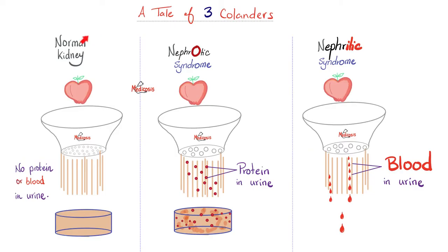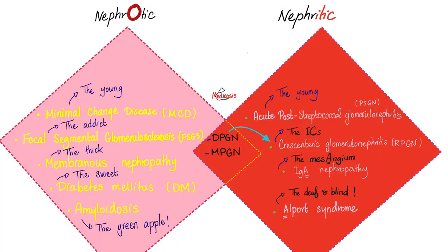Do you remember the story of the normal kidney versus nephrotic versus nephritic syndrome? Normally there should be no protein in the urine and no blood in the urine. In nephrotic syndrome, there is protein in the urine. In nephritic syndrome, itis means inflammation — the kidney is inflamed and shedding tears of blood.